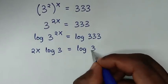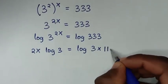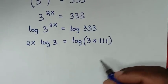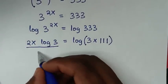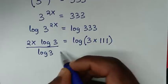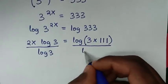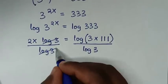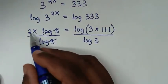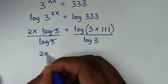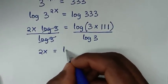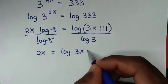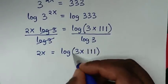333 is the same as 3 times 111. Then we divide both sides by log of 3, so log of 3 cancels, and it will be 2x is equal to log of 3 times 111.